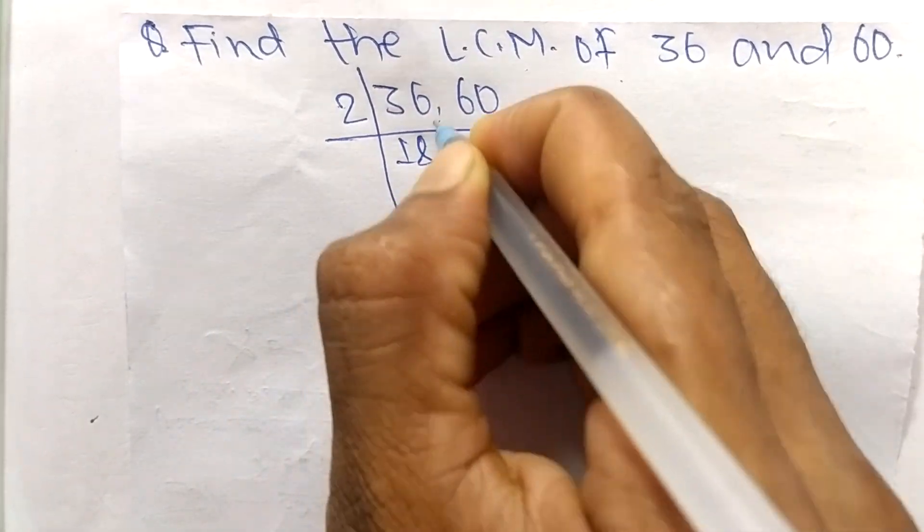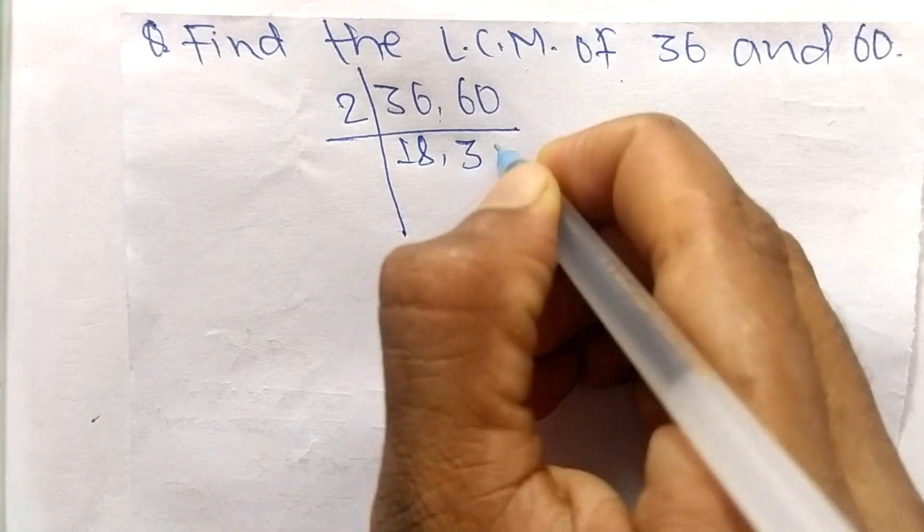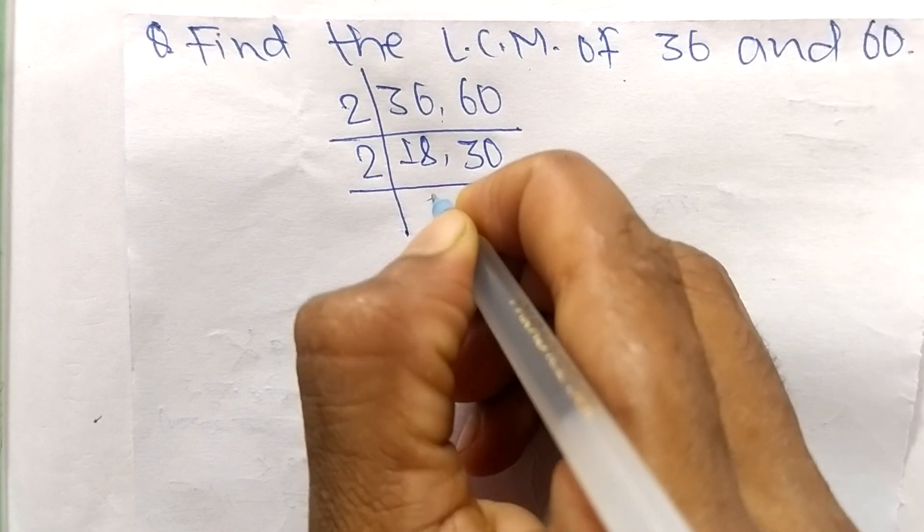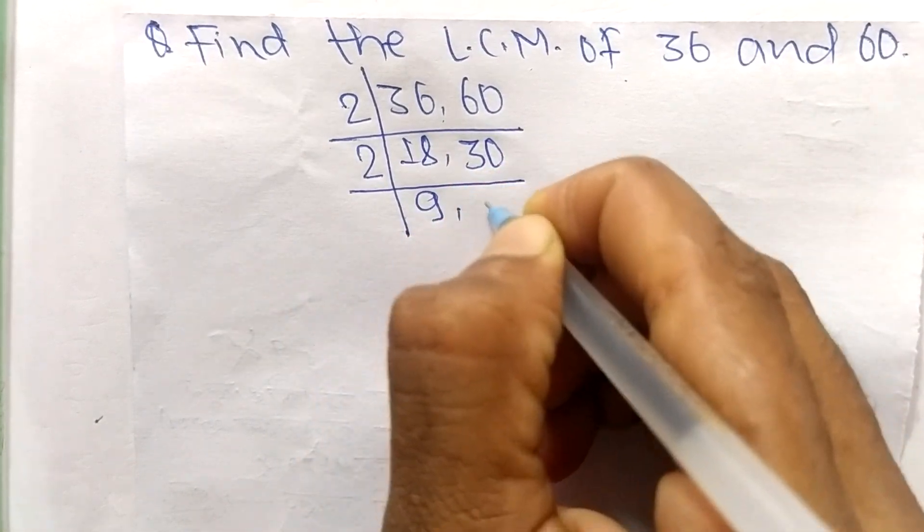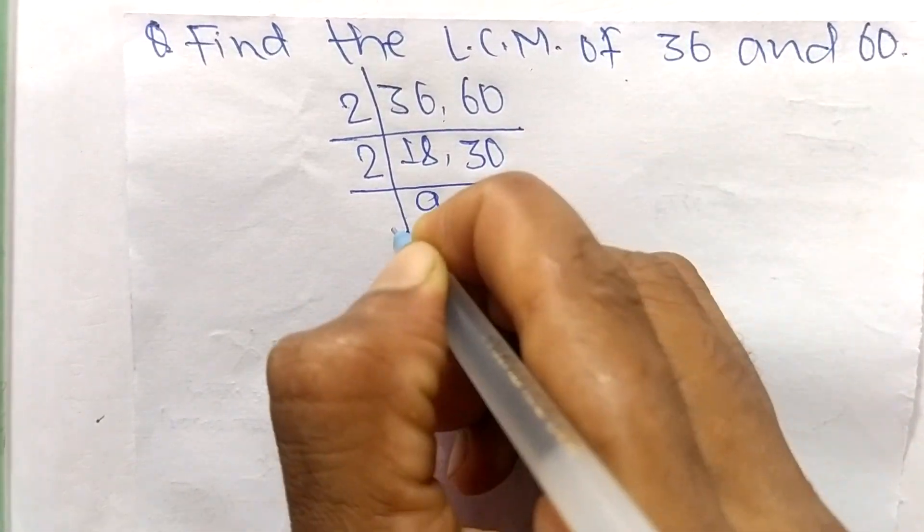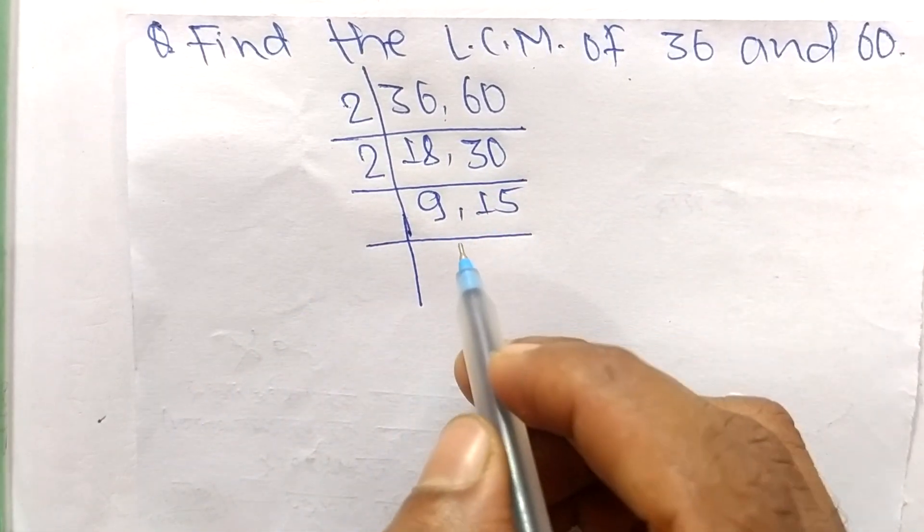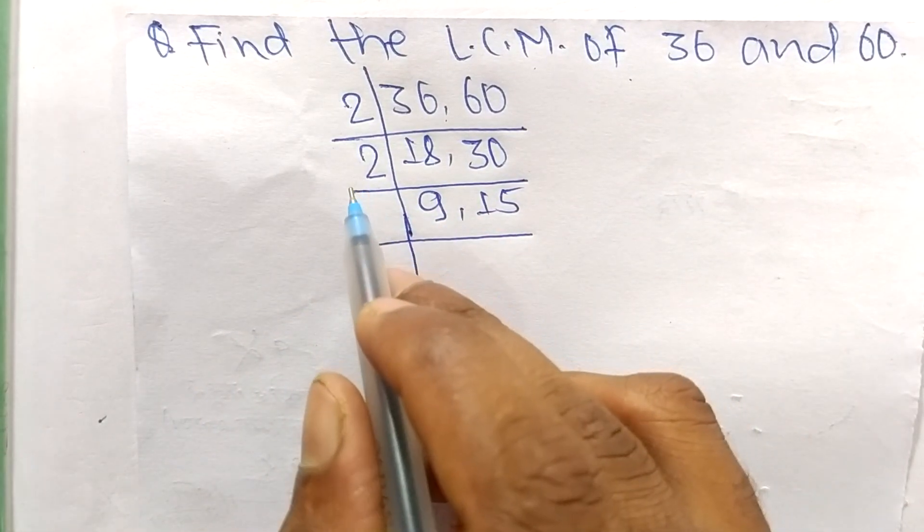2 times 18 means 36, 2 times 30 means 60. Again it is divisible by 2, so 2 times 9 means 18, 2 times 15 means 30. Now these both numbers are not exactly divisible by 2.